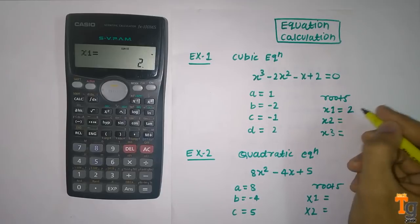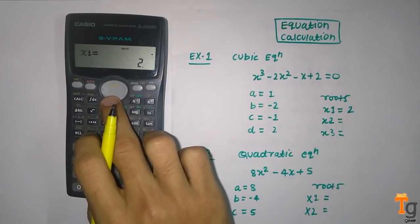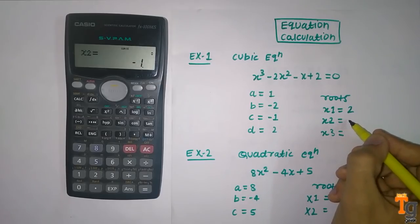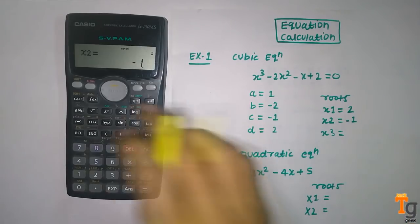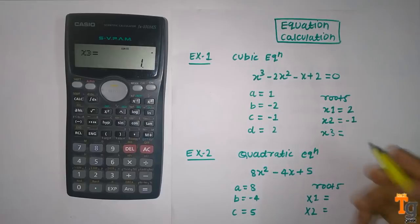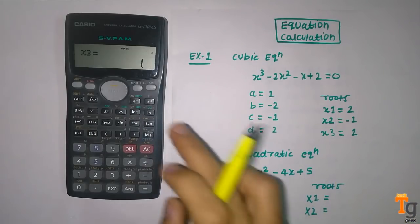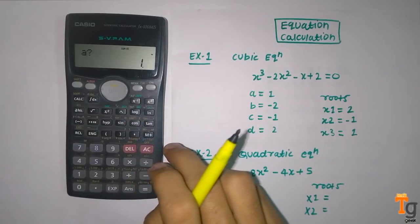By pressing this, we will get x2 equal to minus 1, and for x3, 1. So simple cubic equation in calculator. Now move on to quadratic equation. For this, we have to again change the mode of calculator.